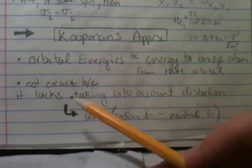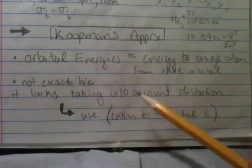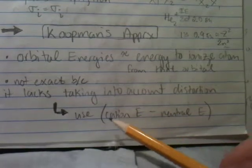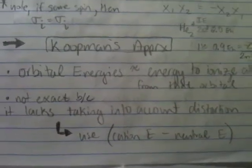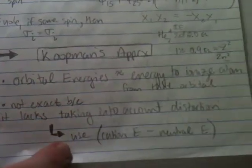This approximation is also not exact because it lacks taking into account distortion. But generally what you want to do to make up for this is to use the cation energy minus the neutral energy, and then this will give you a much better value.